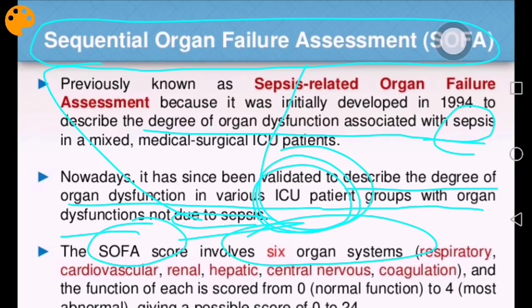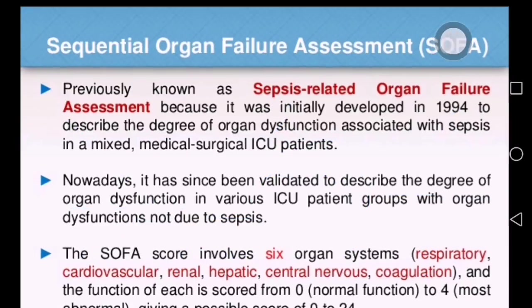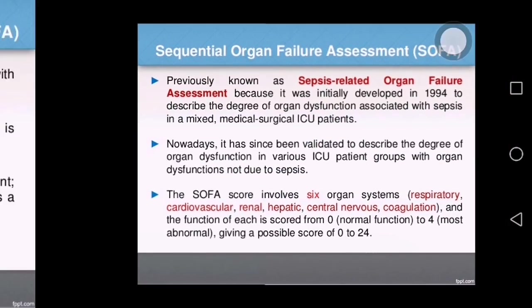The SOFA score consists of six organ systems: respiratory system, cardiovascular system, renal system, hepatic system, CNS, and coagulation. These are all the systems essential for life — very easy to remember, and I hope you will not forget this.